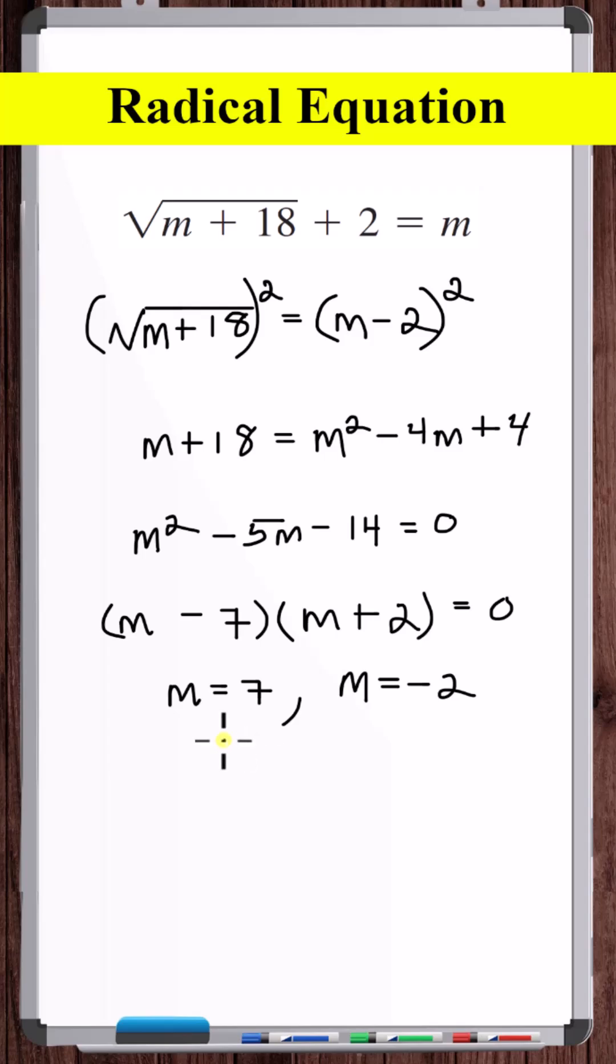But with radical equations, we always need to check our answers because the process of squaring both sides here could cause extraneous solutions. So let's first check 7. So m is equal to 7 is a solution.